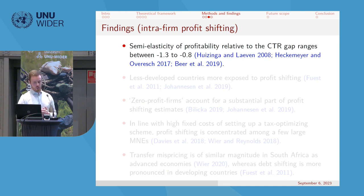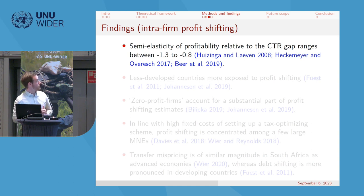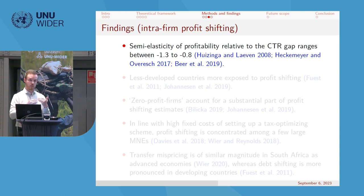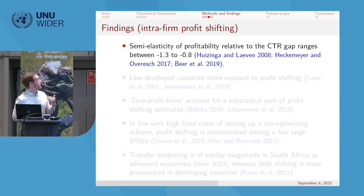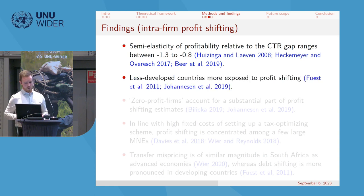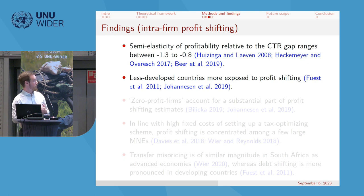Meta-studies on profit shifting find that the semi-elasticity of profitability relative to the corporate tax rate gap ranges from minus 1.3 to minus 0.8. This means a one-percentage-point increase in the tax rate gap is associated with roughly a one-percent decrease in profitability. Less developed countries are more exposed to profit shifting, though fewer studies exist due to data limitations.